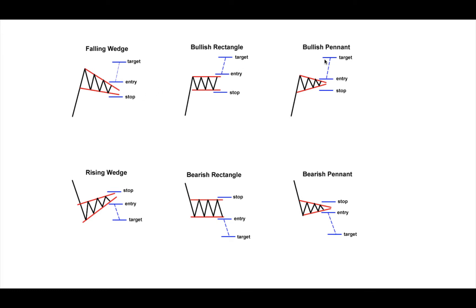A bullish pennant kind of looks like a falling wedge except it forms a triangle. Price comes down and corrects, but the key difference is: in a wedge, both the top and bottom are descending — just the top at a steeper angle. In a pennant, the top is descending and the bottom is ascending. Price squeezes toward the middle, like the rectangle, but converges to a point. It breaks out of the top, with the stop loss below the bottom point. This is a continuation pattern.